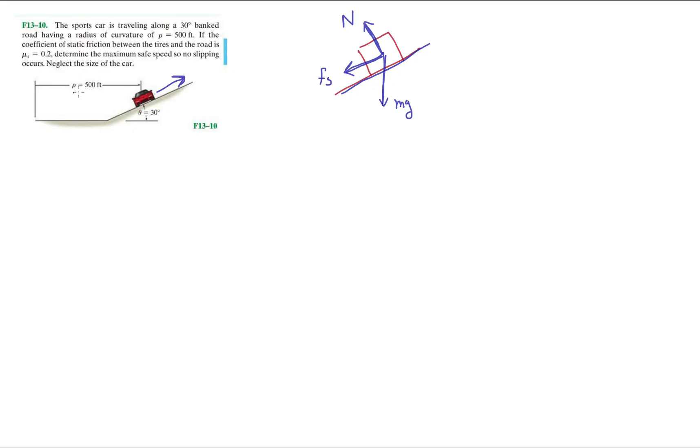And it also gives us the radius of curvature and the angle of 30 degrees. So we have the angle of 30 degrees, and we know that this angle's 30, and this angle's 30.